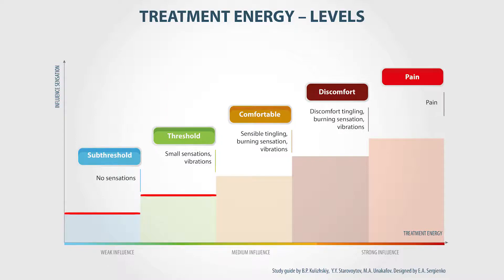Then goes the comfortable level, when the patient clearly can feel the influence, but it stays comfortable and even pleasant for them. When we increase the treatment energy, the burning sensation and tingling intensify, and this is called the discomfort level, when the influence is not comfortable yet bearable.